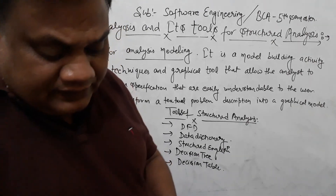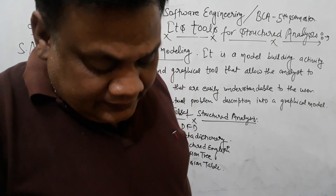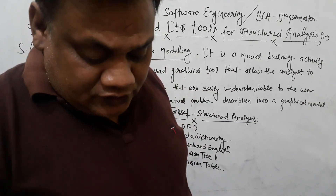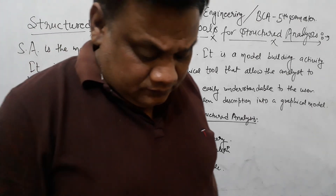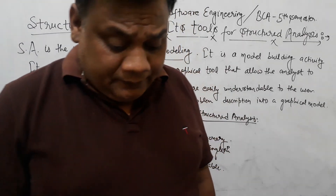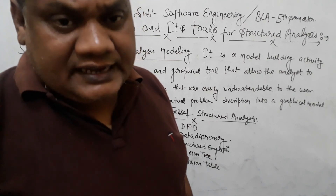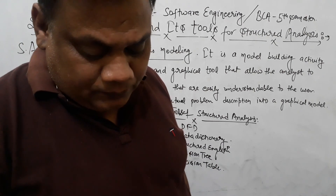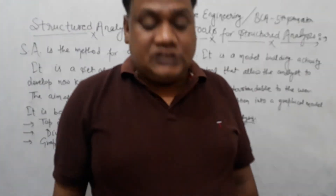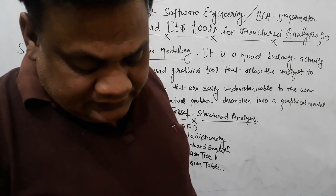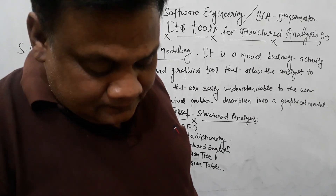DFD stands for Data Flow Diagram. DFDs are the most commonly used tools for documenting the processes of current and required systems. A DFD is a graphical representation of system data and how the processes transform that data. It is also known as a Bubble Chart.